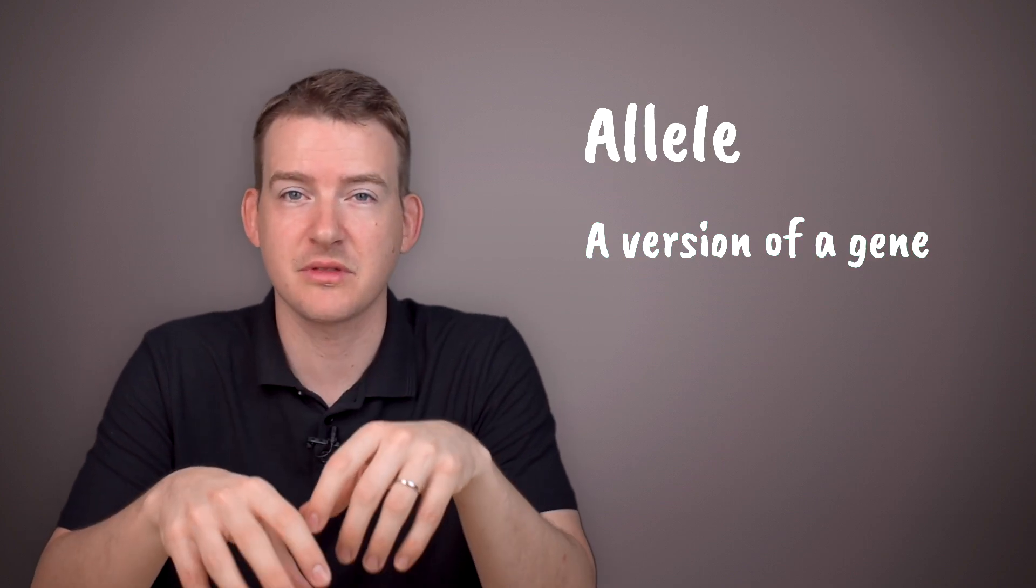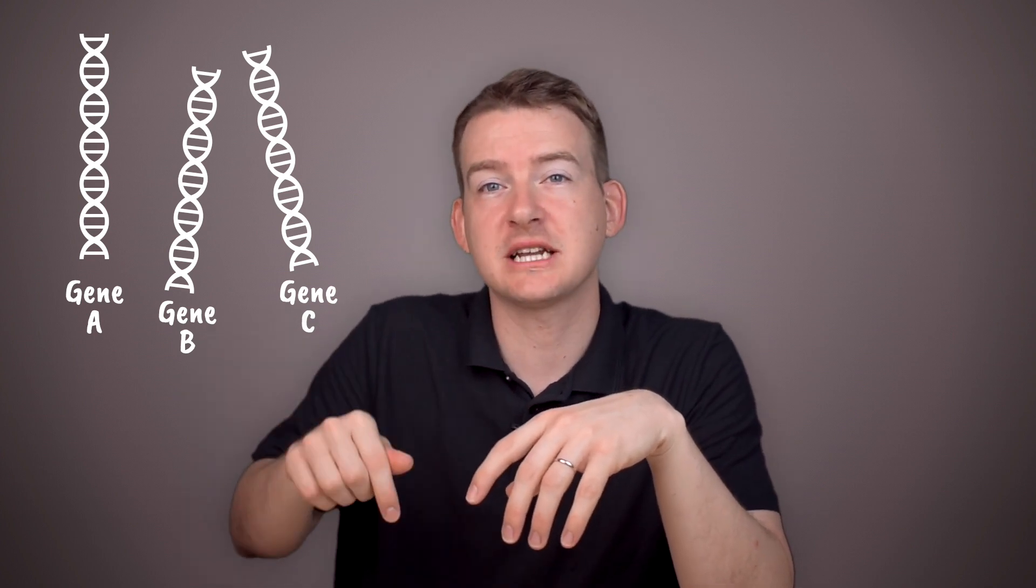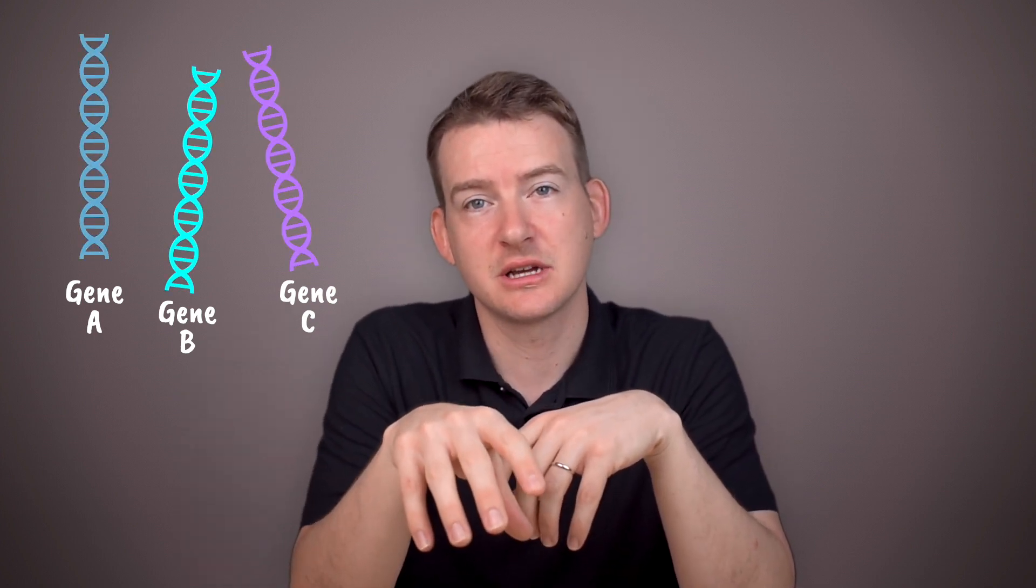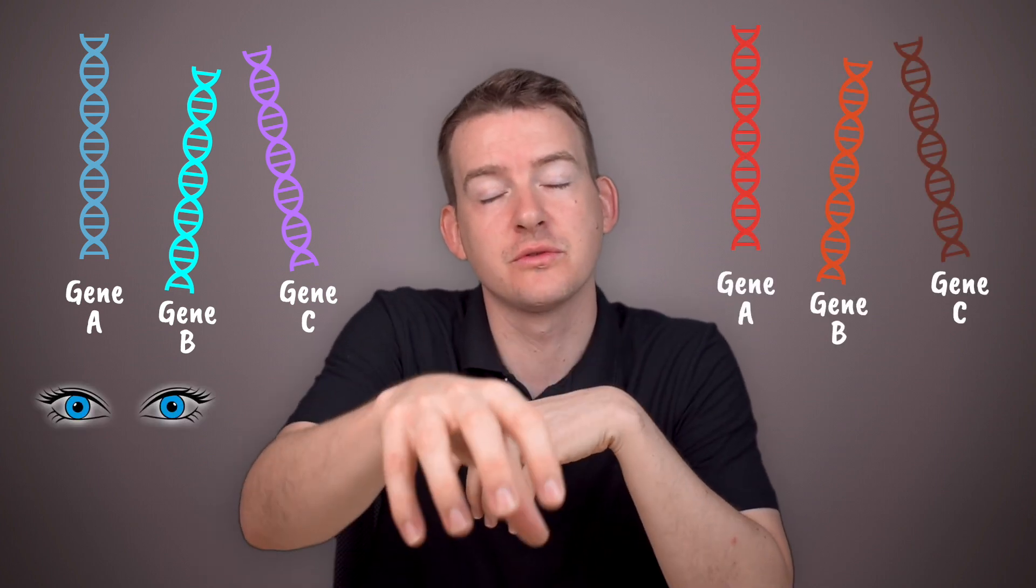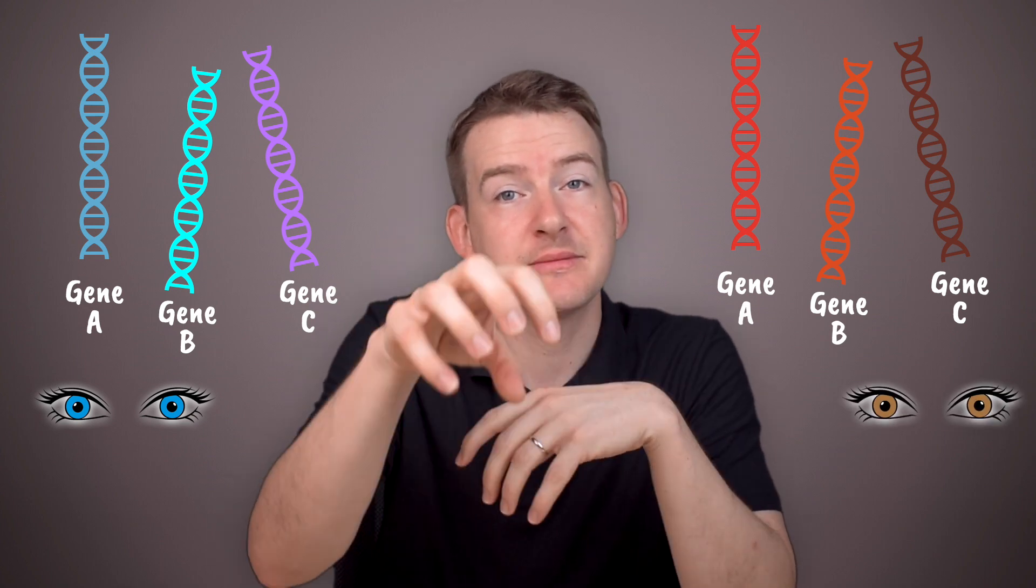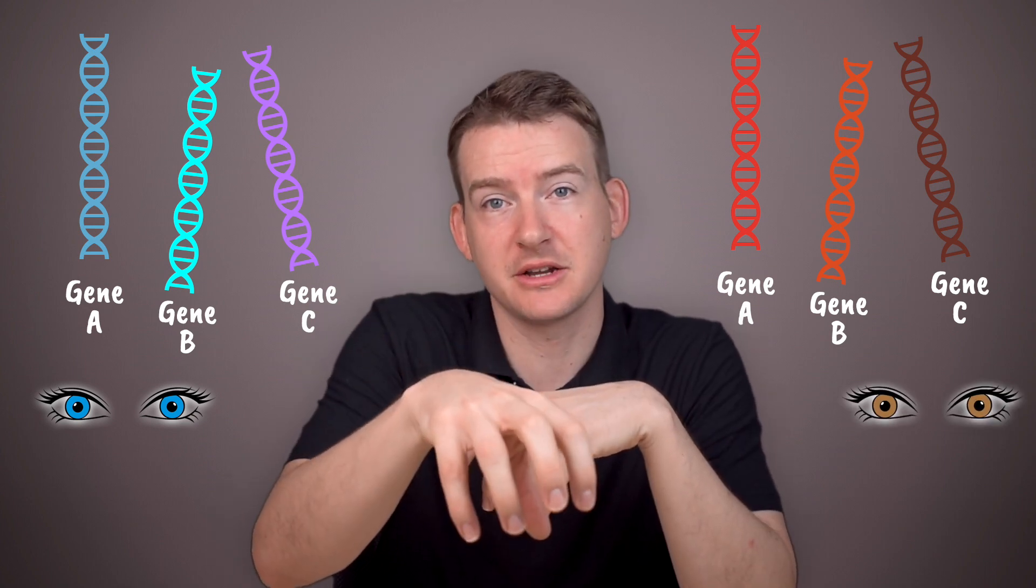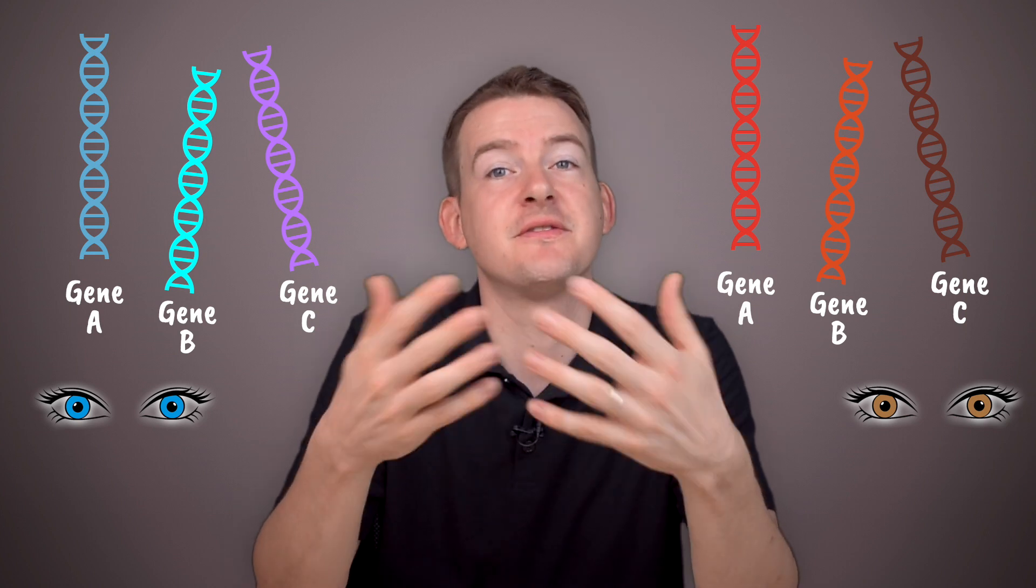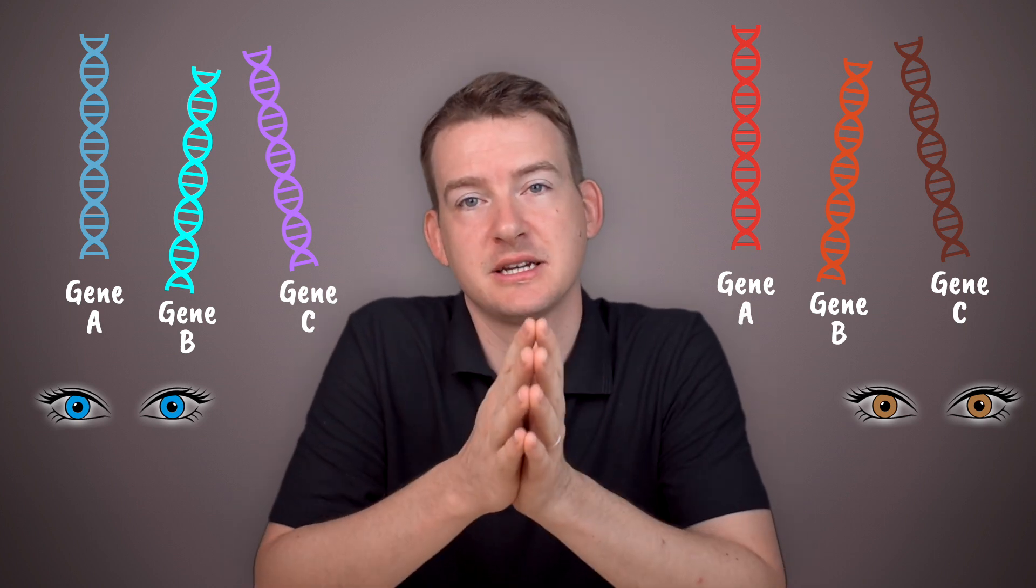For example, there are several genes that determine what eye colour you will have. If you have one set of alleles for those genes, then you would have one eye colour. But if you have different alleles for those same genes, then you would have a different eye colour. It's the same genes for everyone that determine eye colour, but different people have different versions of those genes. Hence, different features.